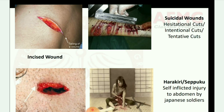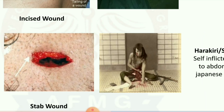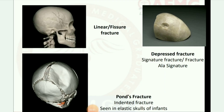Next image: harakiri and seppuku — self-inflicted injury to the abdomen by Japanese soldiers. Third image: stab wound. Here are some images of skull fractures: linear or fissure fracture; depressed fracture — also known as signature fracture or fracture à la signature.